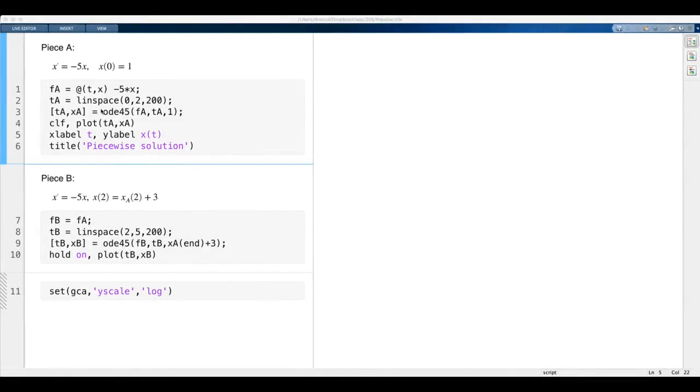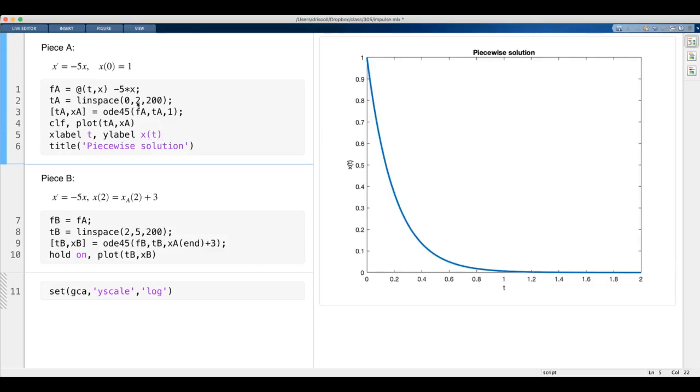Here's a computational solution of the same impulse problem. In the first part, we just have the unforced equation with the original initial condition. Nothing happens until that impulse kicks in at time 2. After the impulse, it's still the unforced equation, but we've taken the solution at time 2 and added 3 to become the initial condition for the second phase.